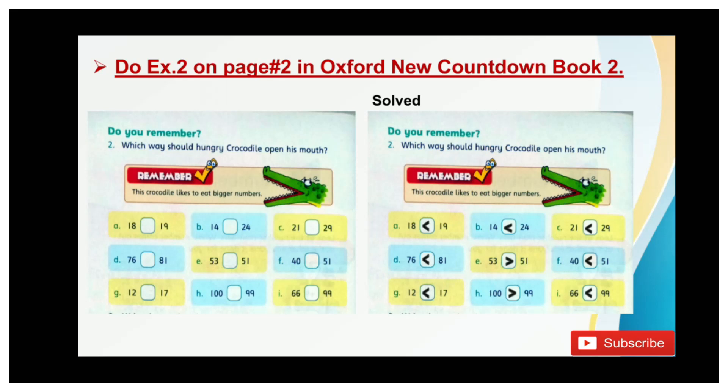In A, 18 is smaller than 19, now put the smaller sign. In B, 14 is smaller than 24, now put the smaller sign. In C, 21 is smaller than 29, now put the smaller sign.